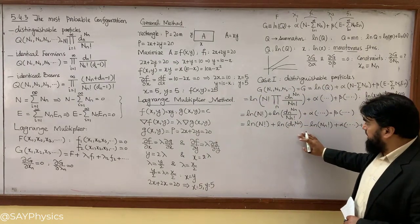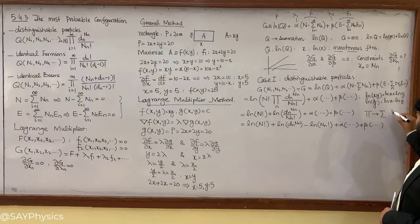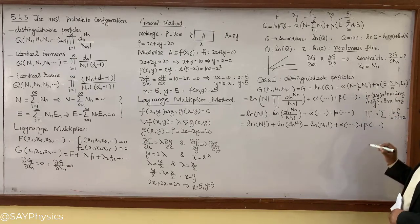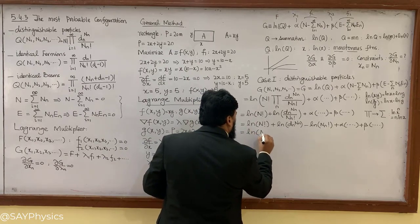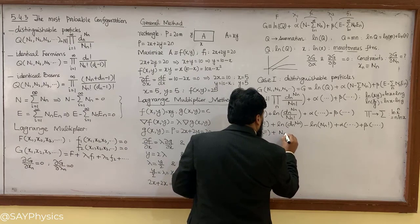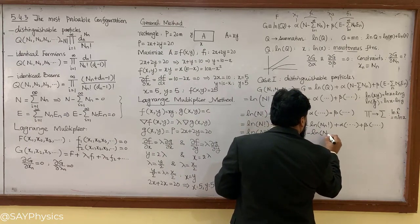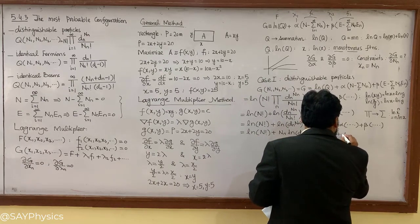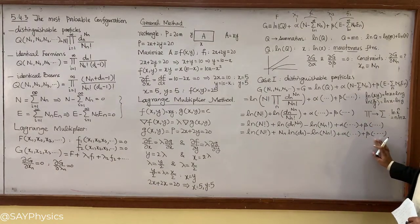Now there is another rule of logarithms: log(X^N) = N·log(X). Applying this, the power comes in front. Finally we get G equal to log(N factorial) + N_N·log(D_N) − log(N_N factorial), plus alpha and beta constraint terms. Now there is one thing we really have to focus on.